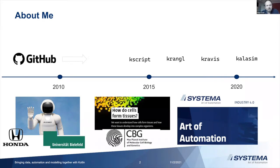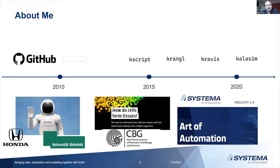I started around 2010 doing a PhD thesis at the University of Bielefeld in collaboration with Honda Research, where I built an AI system that allows a humanoid robot to bootstrap its own language representation. I then took those ideas and methods into my first job at the Max Planck Institute for Molecular Cell Biology and Genomics in Dresden, where I researched how cells form tissues. I stayed there for 10 years and learned a lot about the necessities of dealing with complex systems — heterogeneous data sets, causality, analysis at scale, and supercomputing.